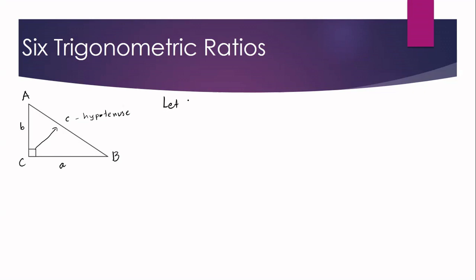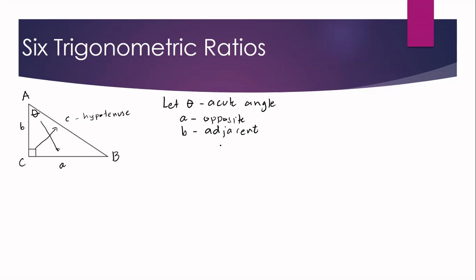Now let us let theta be an acute angle. Suppose we name angle A as our theta. We need to identify which sides — between A and B — are the opposite side and the adjacent side. Side C is always our hypotenuse. Opposite the angle, from the word itself, means that if angle A is our theta, then side A is the opposite side. And the other leg, side B, will be the adjacent side. It is very important for today's lesson that you can identify which is the opposite and adjacent side of a marked angle theta.